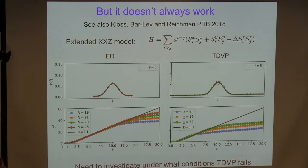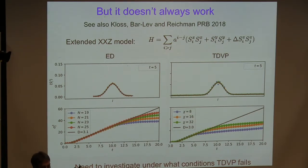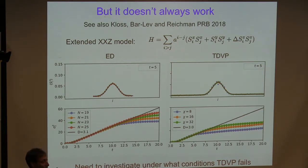This is not always the case. Here is another model — an XXZ model with exponentially decaying interaction. In this case, this is exact diagonalization, and this is the time-dependent variational principle. You see that as we increase bond dimension, at the time at which it reaches the maximal entropy, the calculation fails and the diffusion reverts to an unphysically much smaller diffusion constant. Fortunately you can see this from the calculation — it doesn't converge as you go to larger and larger bond dimension. I don't understand this very well; I don't understand when it will converge and when it will not.